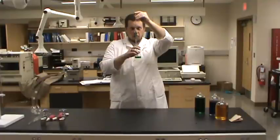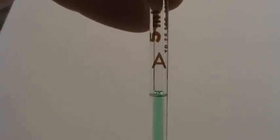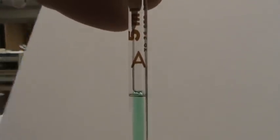And we want the bottom of the meniscus to be at the calibration line. So there's my calibration line. I want to get level with it and then let the liquid slowly drain down until the bottom of that meniscus is right at the calibration line.